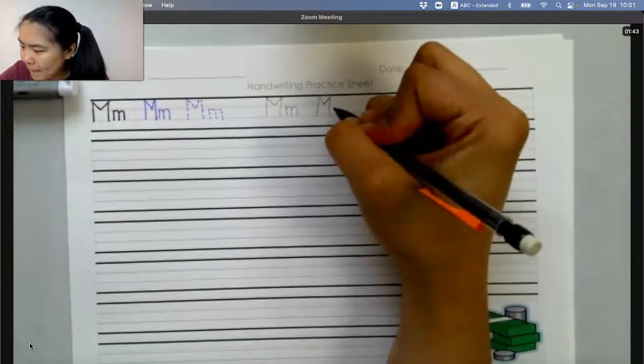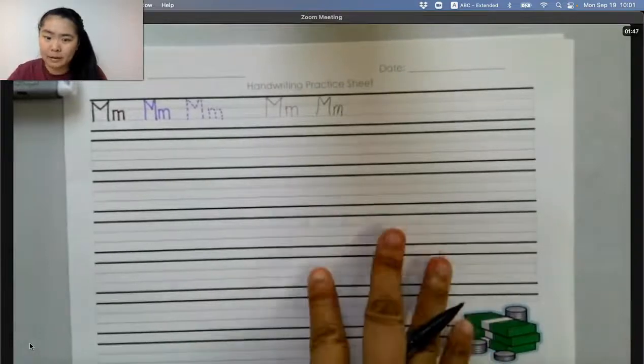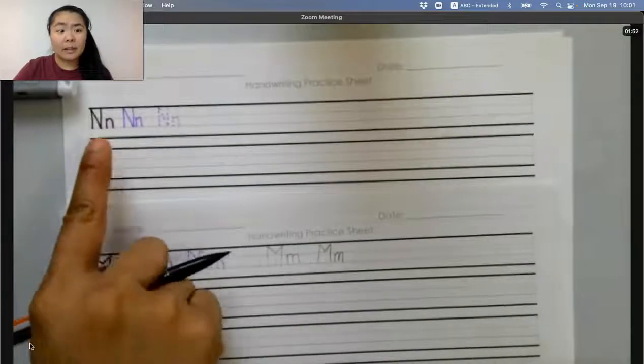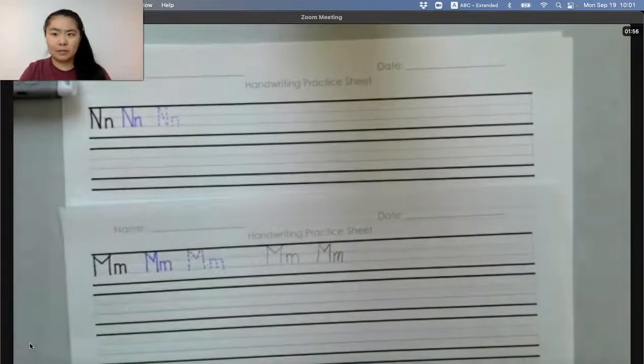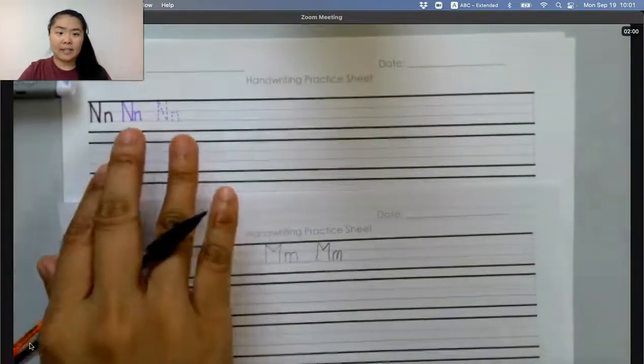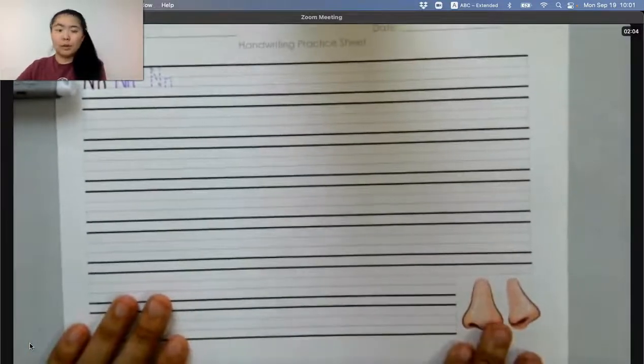What letter M and N. Ta-da. This is M. And this. What letter is this? Good. This is N. N says N like noon or nose.